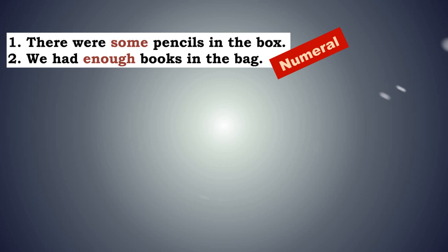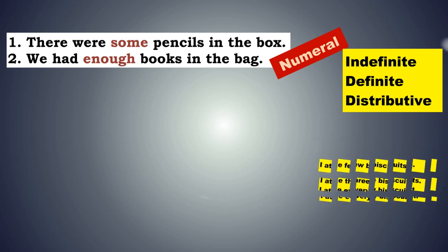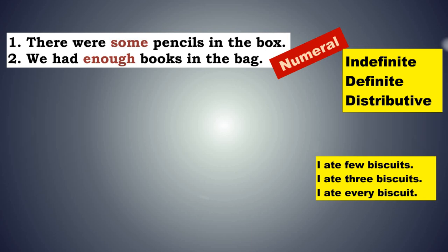Numeral adjectives are of three types: indefinite numeral, definite numeral and distributive numeral. Indefinite numeral: I ate few biscuits — few is not telling you how many exactly. Definite numeral: I ate three biscuits — you know the definite number. Distributive numeral: I ate every biscuit — each and every biscuit is distributed, so you get the word every. There is a separate presentation in our channel on this topic.